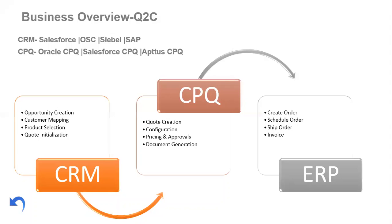All the quote configuration and opportunity data gets moved to the ERP systems, where the order gets generated, moves to the next level of the ERP process, and gets delivered to the customer. That's how a business code-to-cash flow works. To implement this code-to-cash flow in an automated process, we have these systems. Using CRM, CPQ, and ERP tools, organizations implement their business requirements into data flow systems — reducing or eliminating manual errors by sales reps, order issues, and time delays from manual processes.